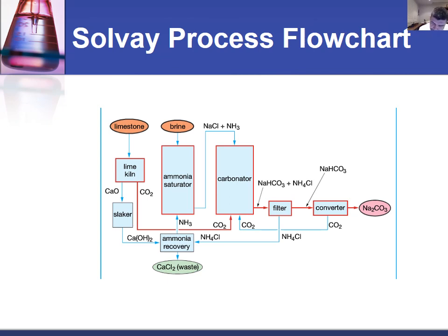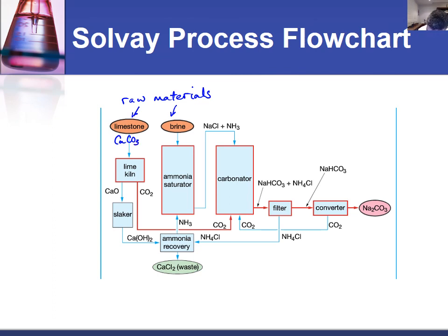So firstly we have our raw materials. The flowchart identifies brine and limestone as our two raw materials. The limestone's key component is calcium carbonate, and the brine is sodium chloride and water. Keep those in mind as we go through.